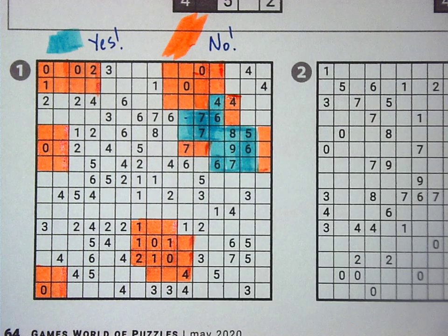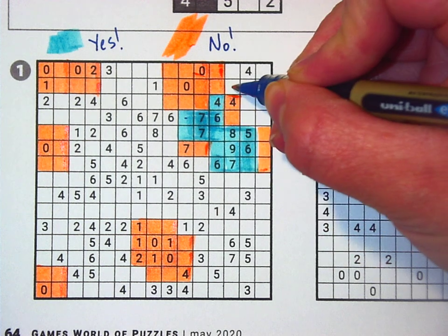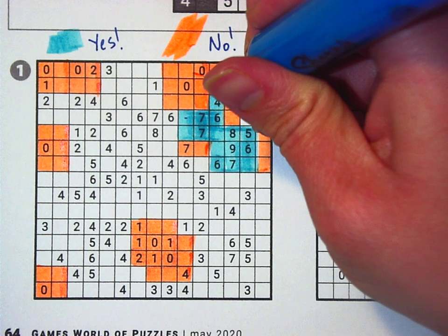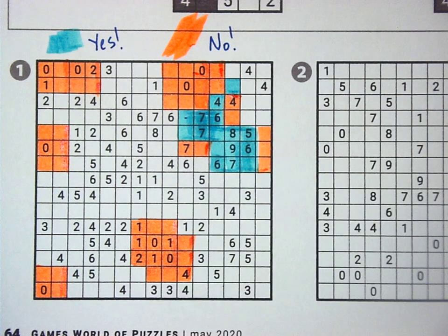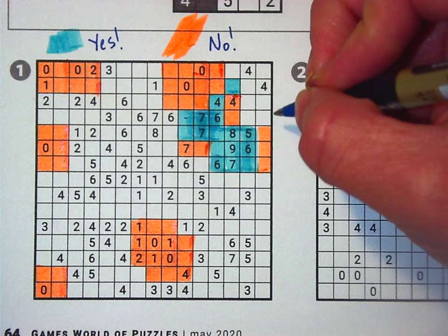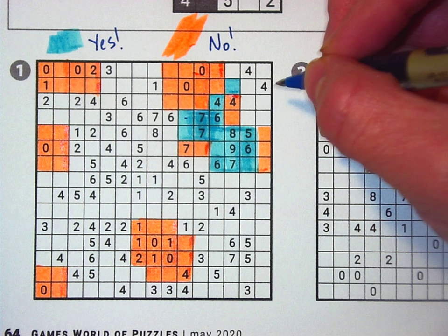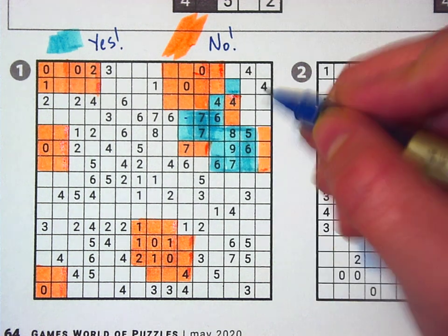And then if you look at the four on top of it, so far it has one, two, three. So this spot right there must also be a no. I'm gonna finish this little corner with you. Don't worry, I'm not gonna do this whole puzzle. That would be too much.